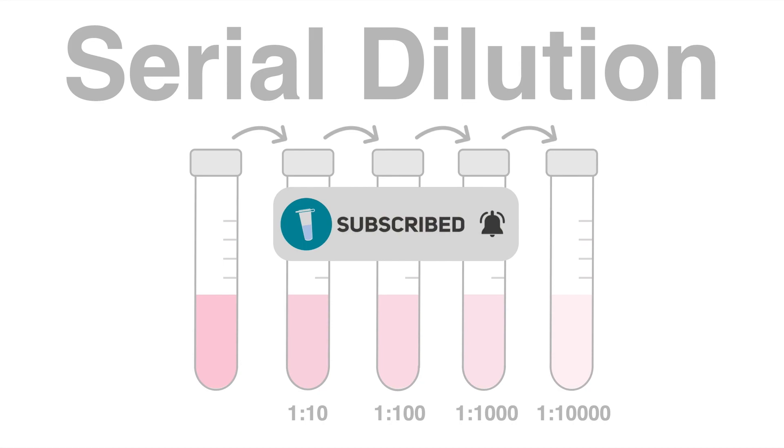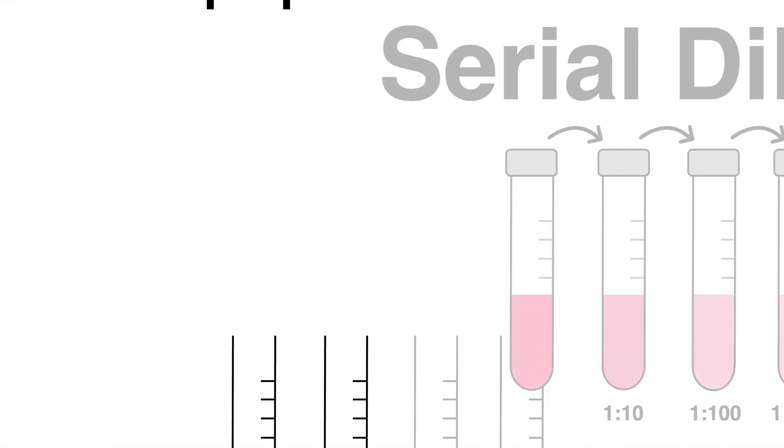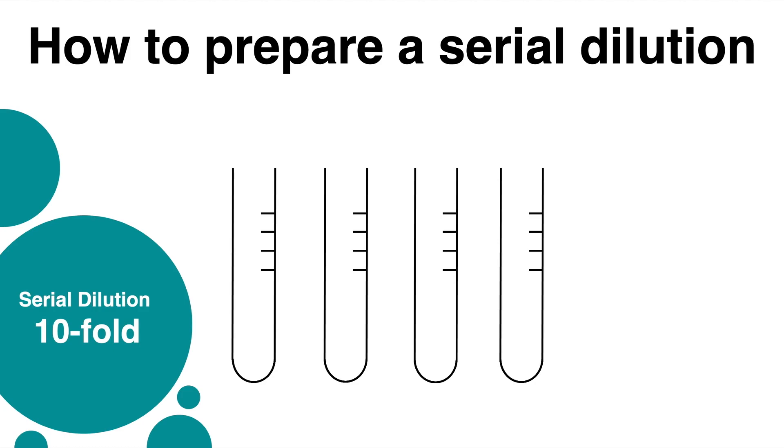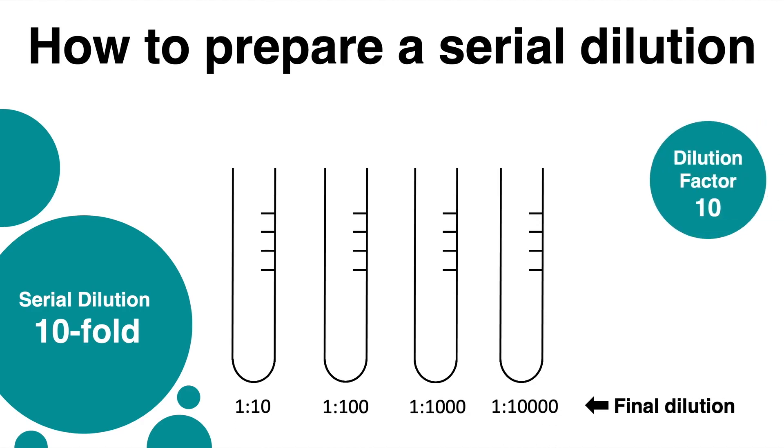Thanks for all your support! Most serial dilutions are either tenfold or twofold. In this example it is demonstrated how a tenfold serial dilution can be prepared. Tenfold dilutions have a dilution factor of 10. That means each dilution step contains 10 times less of the content than the previous one.